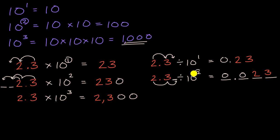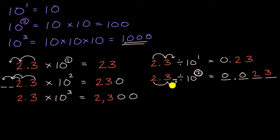You can see the pattern: whatever the exponent is, if you're dividing by 10 to that power, you shift each digit that many places to the right.